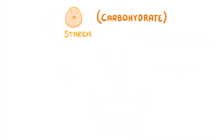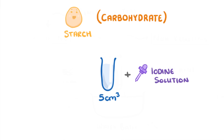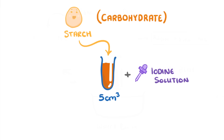Just like sugars, starch is a type of carbohydrate but it's a much larger and more complex molecule. The test for it is much simpler — take five centimeters cubed of your food sample and add a few drops of iodine solution, which will turn the solution a brown-orange color. Give it a gentle shake, and if starch is present the solution will change from brown-orange to a blue-black color. We simply call this the iodine test.